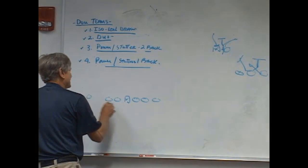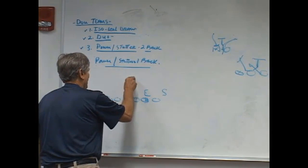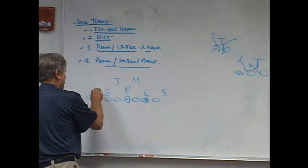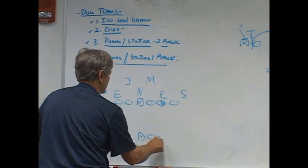Okay, I've got a defensive end somewhere, I've got a Sam backer, I've got a nose guard, and I've got a Mike. I'll call that a jack, an end, and a will. I've got 3-4 personnel—three down linemen, four linebackers.